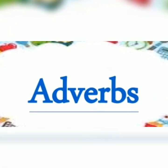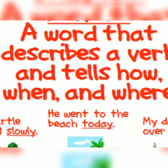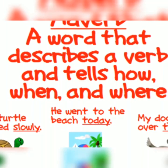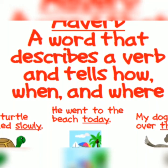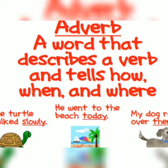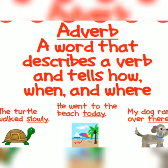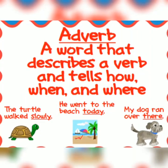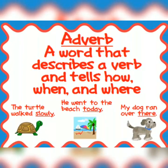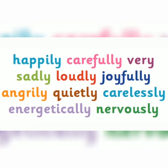Now let's see the adverbs in brief. An adverb is a word that describes a verb and tells how, when, and in what way. See the below example: the turtle walked slowly. So after the verb, if we ask how, we get the answer slowly. In what manner? Slowly.